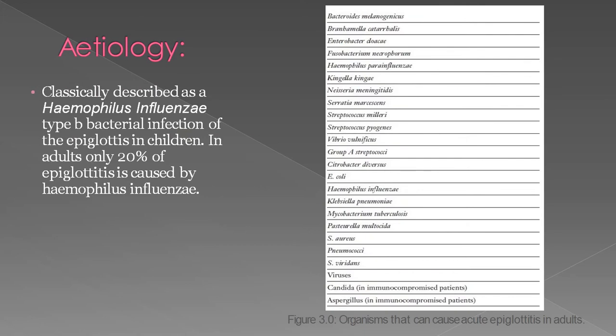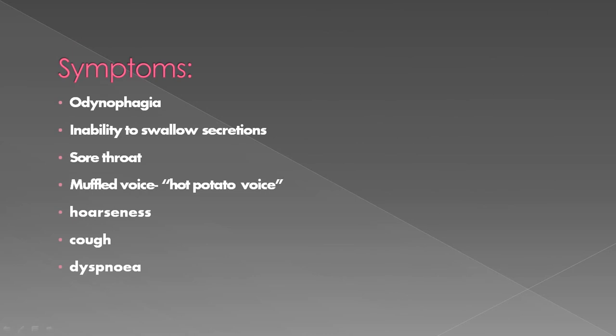The classically described cause is Haemophilus influenzae type B bacterial infection. It is the most common cause in children. In adults, only about 20% of epiglottitis is caused by H. influenzae. Other causes include Bacteroides, Klebsiella, Mycobacterium tuberculosis, Staphylococcus, Pneumococci, Streptococcus viridans, viruses, Candida, and Aspergillus.